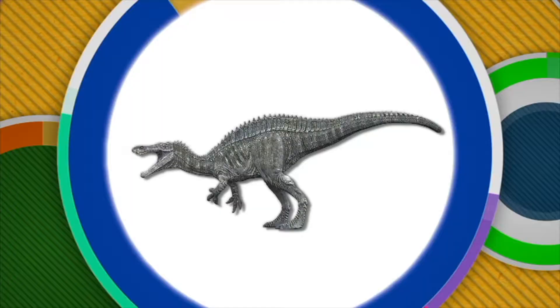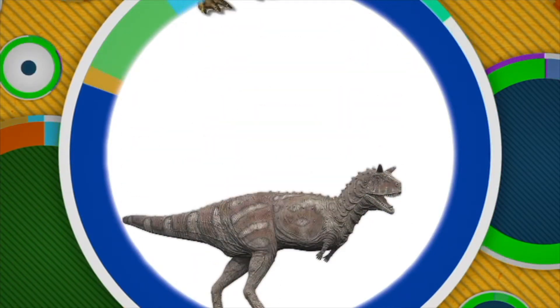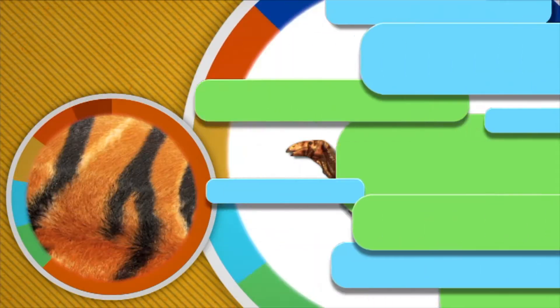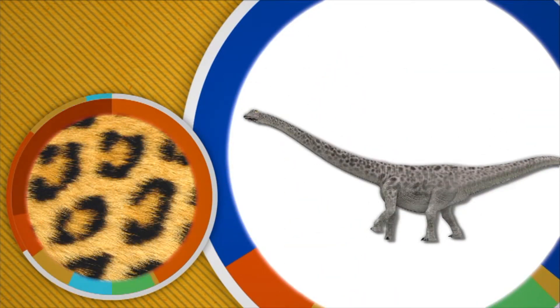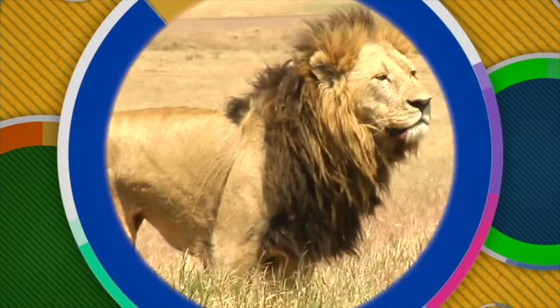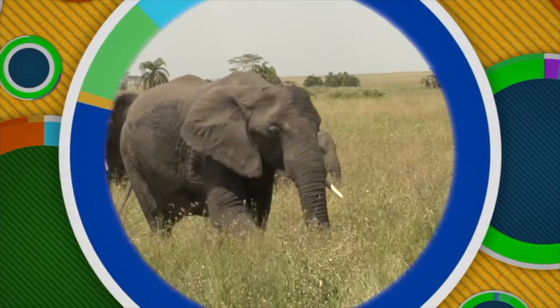Fossils give us a very good idea of what dinosaurs were like. However, the one thing that fossils haven't been able to tell us is what color or skin patterns the dinosaurs had. Maybe they came in different colors — maybe some were grey, or brown, or yellow. Maybe some had stripes like zebras or tigers, or maybe spots like leopards. It's also difficult to tell what dinosaurs sounded like. Did they have the roar of a lion, or a trumpet sound like an elephant? Or maybe they didn't make any noise at all.